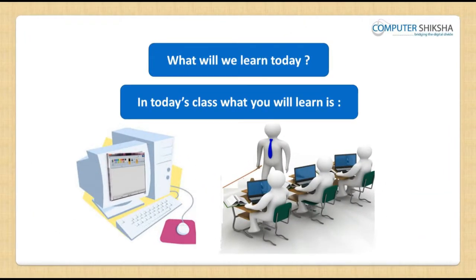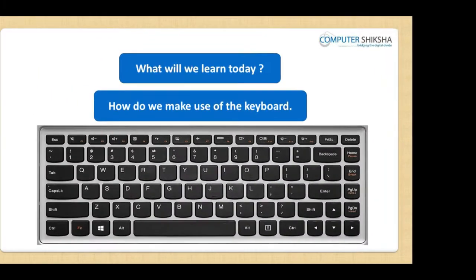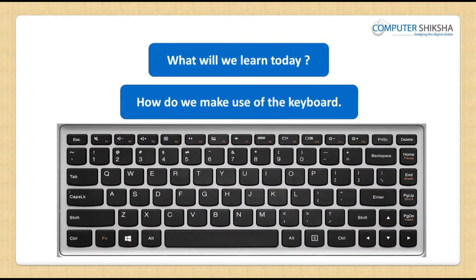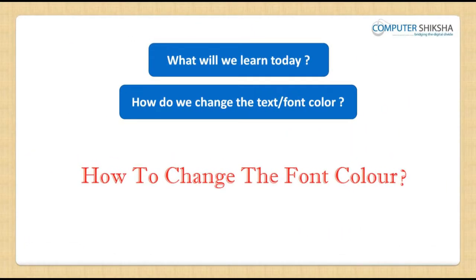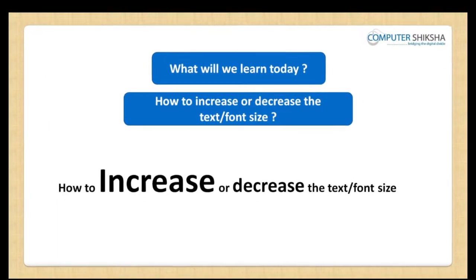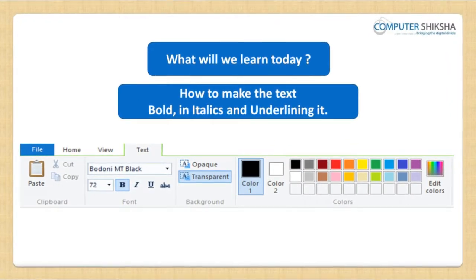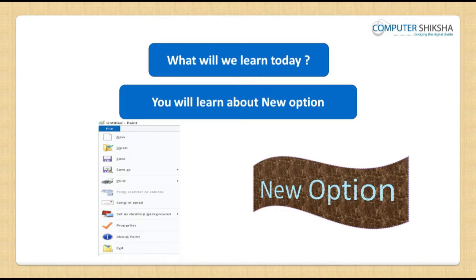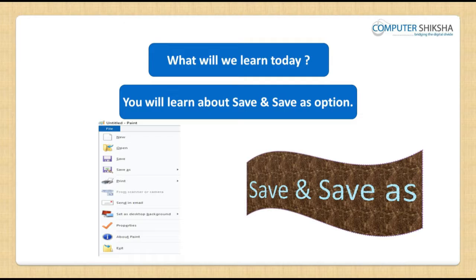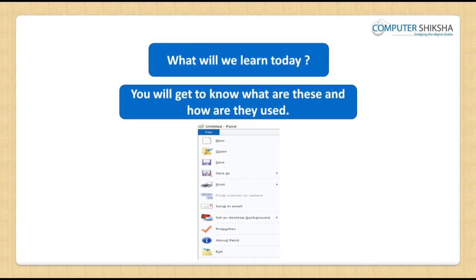In today's class, what you will learn is how to type in an MS Paint file, how do we make use of the keyboard, how do we change the text style or the font name, and how do we change the writing of our text, how do we change the text or the font color, how to increase or decrease the text or the font size, how to make the text bold, in italics, and underlining it. You will learn about new, open, save and save as and about the desktop background. You will get to know what these are and how they are used.